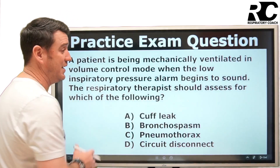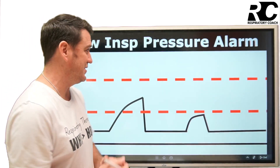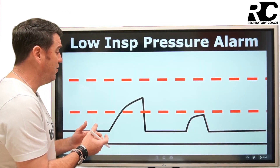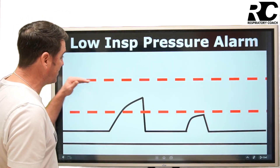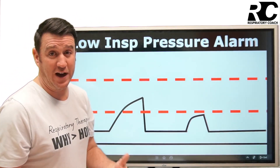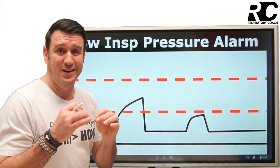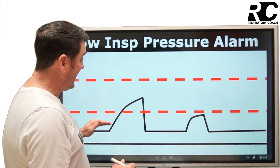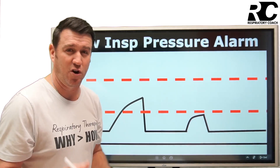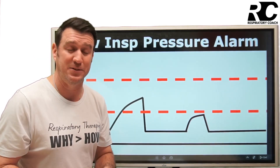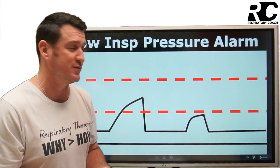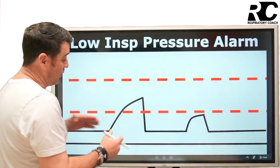Looking at a pressure waveform, the high inspiratory pressure alarm is going to notify us if the pressure during the positive pressure breath is elevated up to that alarm setting. Remember, the high inspiratory pressure alarm was unique because it actually terminates the inspiratory phase — that's what makes it unique as an alarm, because it also serves as a limit.